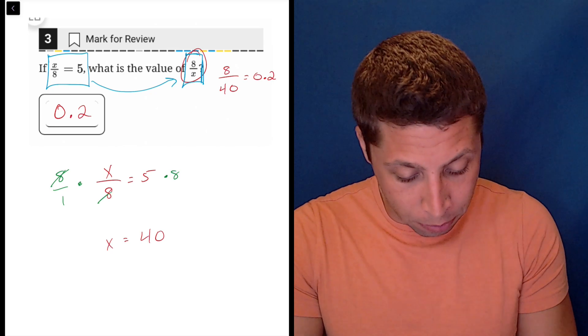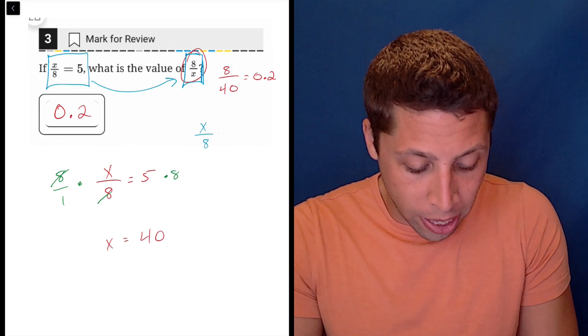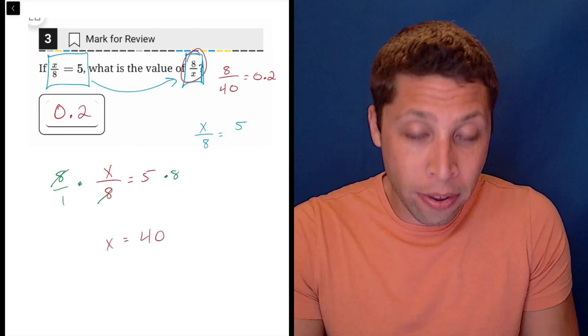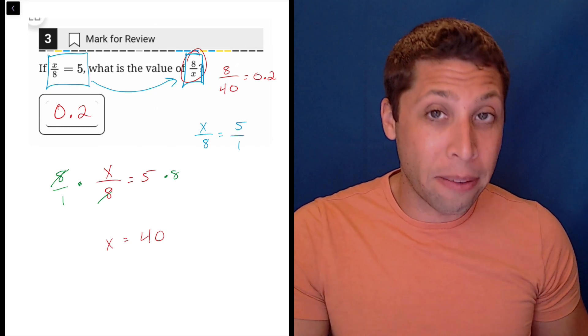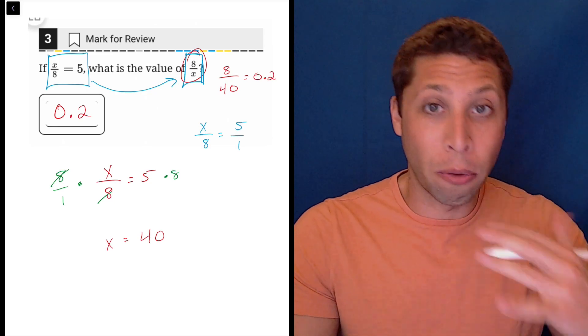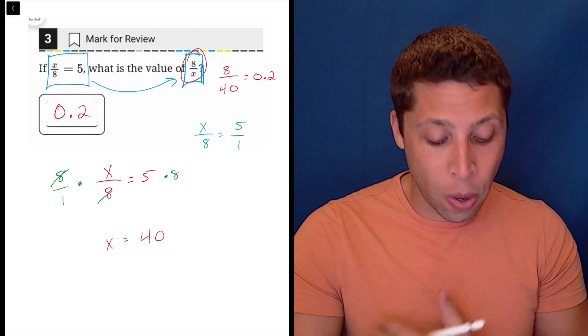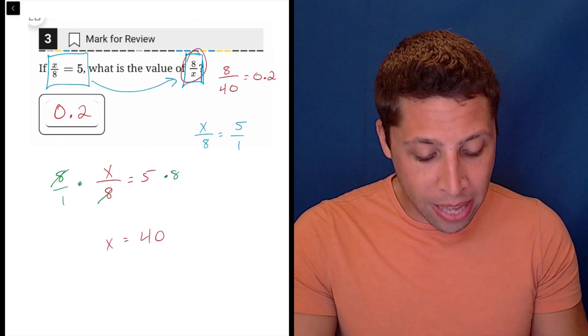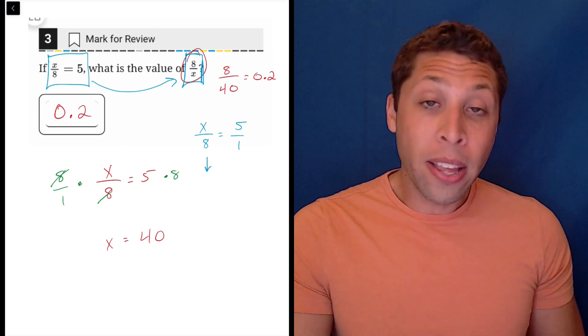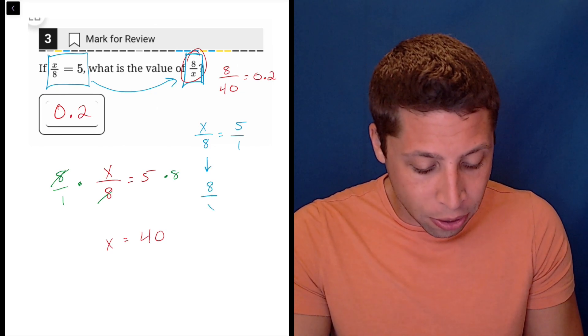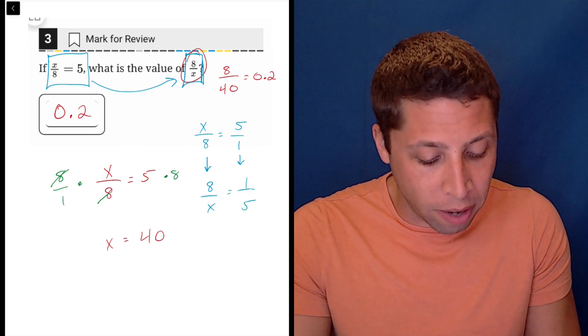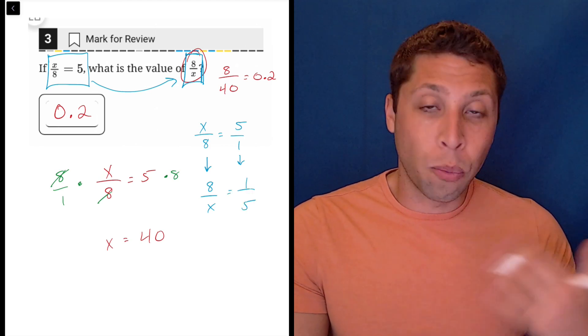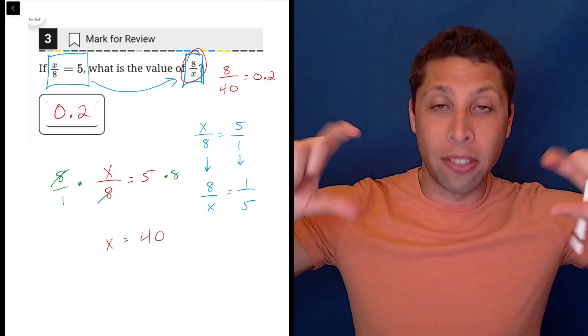Let me do it over here. X over eight equals five. To better understand what's going on, we can just rewrite five as five over one, because any number over one is just the number. So the reason we might do that is that when we then flip this side so that it's eight over X, we do the exact same thing to this side. So instead of being five over one, now it's one over five. You're allowed to do that. This is okay.